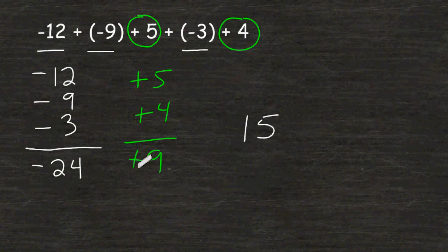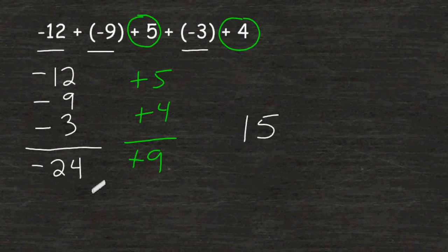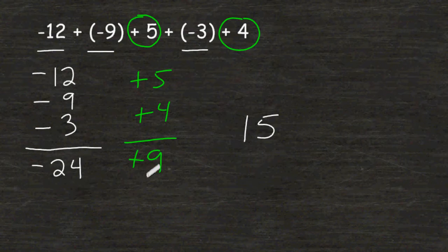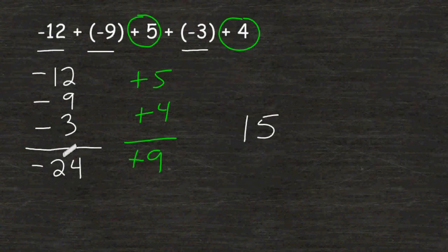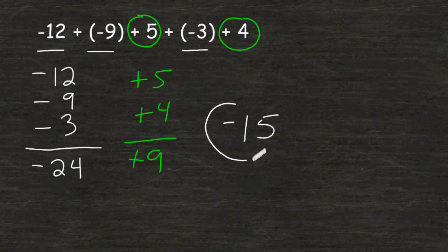Now we have to use the sign of the value that has a greater absolute value. Because negative 24 is further away from 0 than positive 9, we have to use the sign of negative 24. So the answer ends up being negative 15.